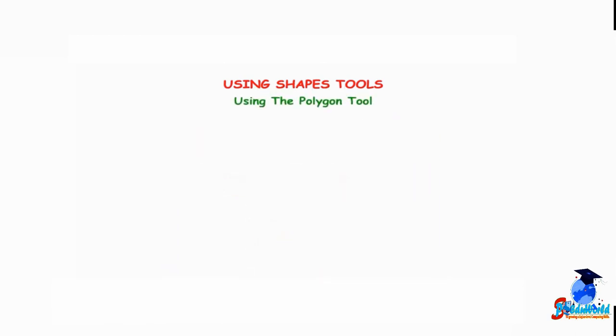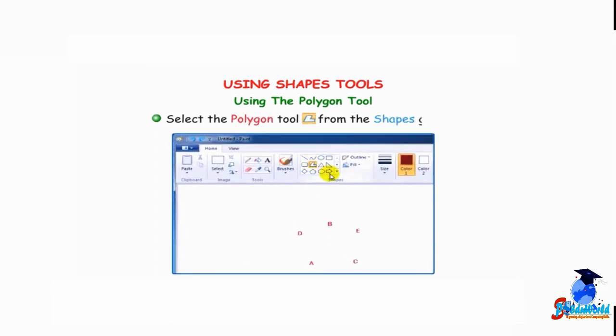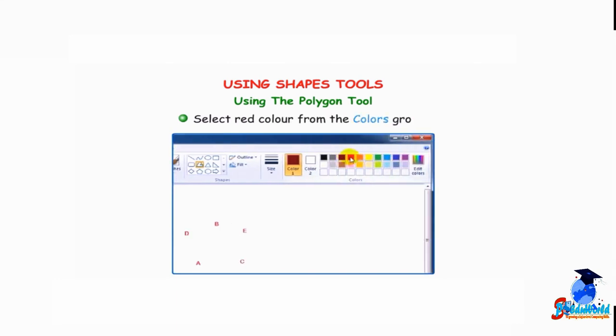Using the polygon tool: Select the polygon tool from the Shapes group. Select the thickness of a line by clicking on the Size button. Select red color from the Colors group.